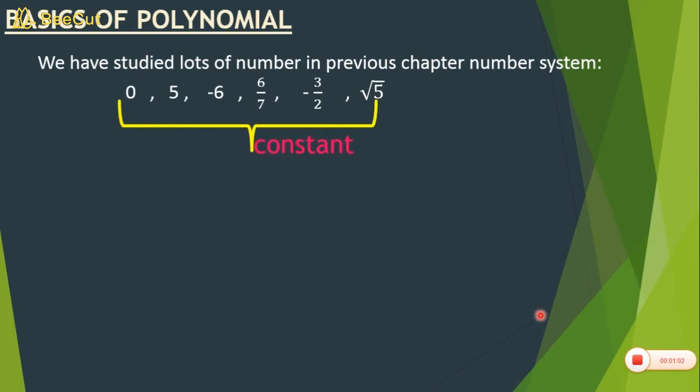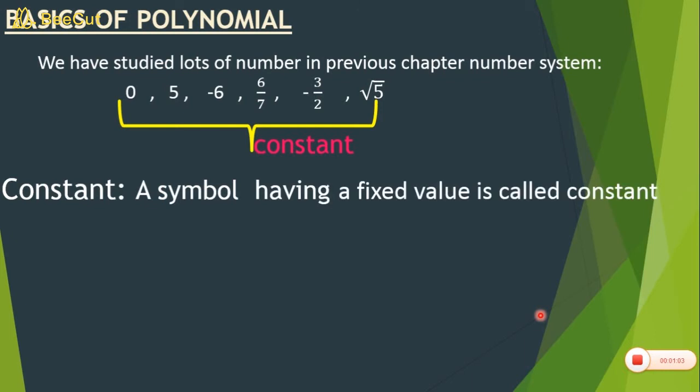Let's see the definition of constant. A symbol having a fixed value is called a constant. Examples of constants are: 4, pi, root 7, 5, minus 9.